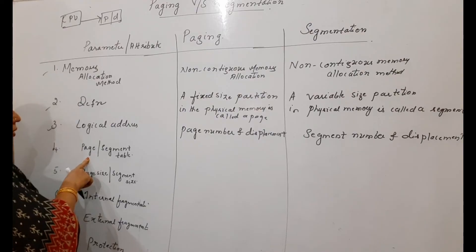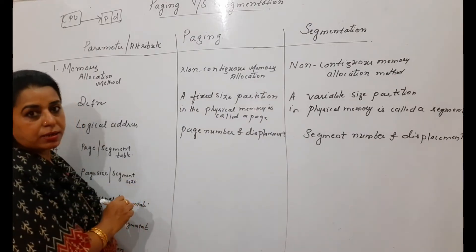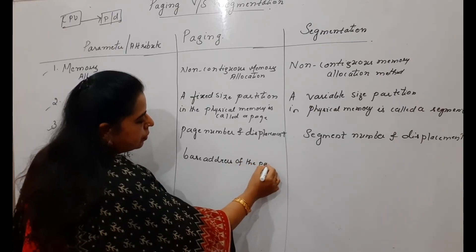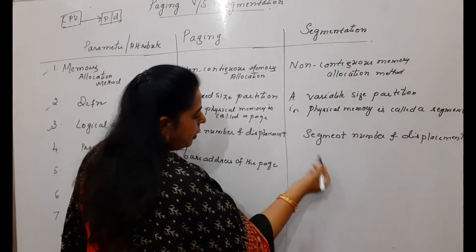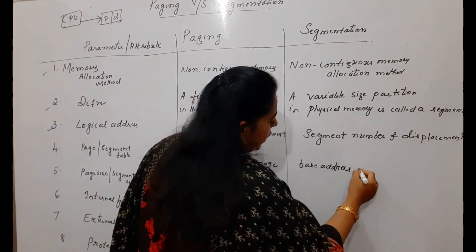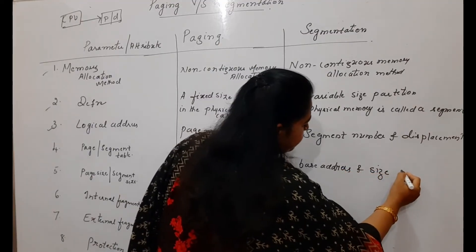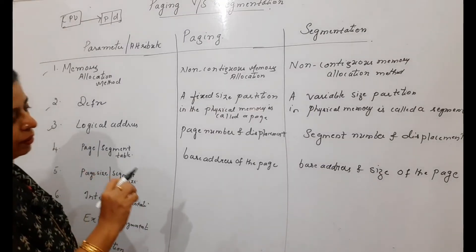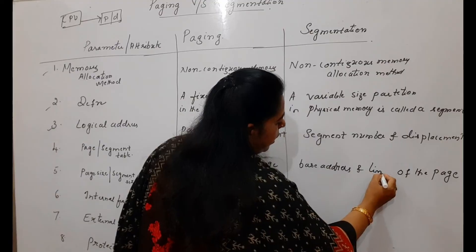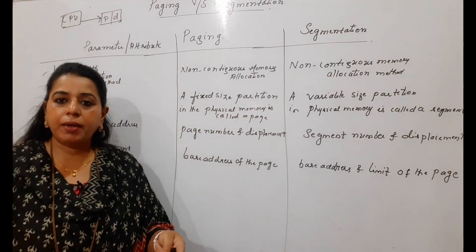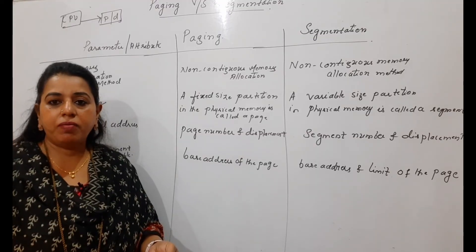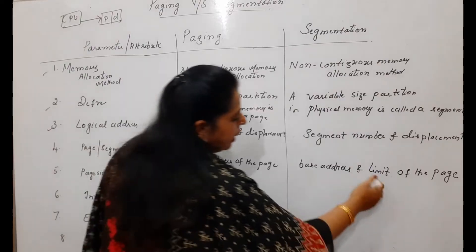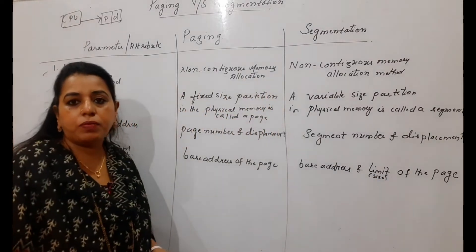The fourth parameter is the page table versus the segment table. The page table in paging consists of the base address of the page. Whereas the segment table in segmentation consists of both the base address and the size (limit) of the segment. In the segment table, the segment number is the index, and the contents include the base address from where the segment starts and the limit, which is the size of the segment.